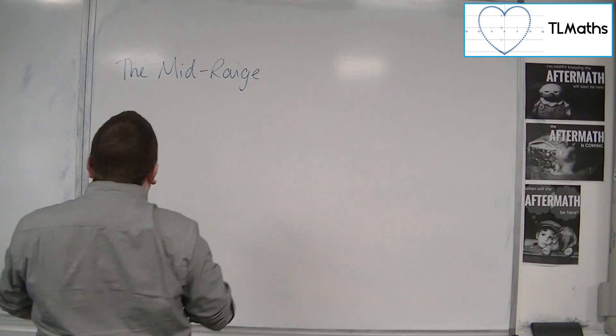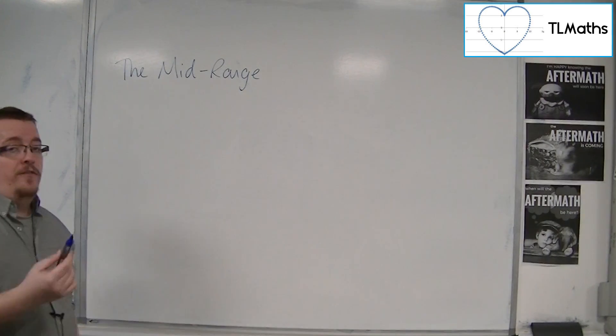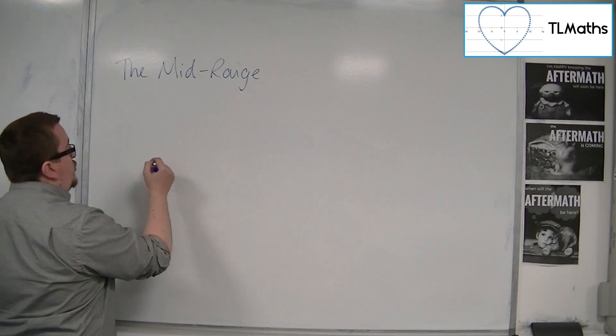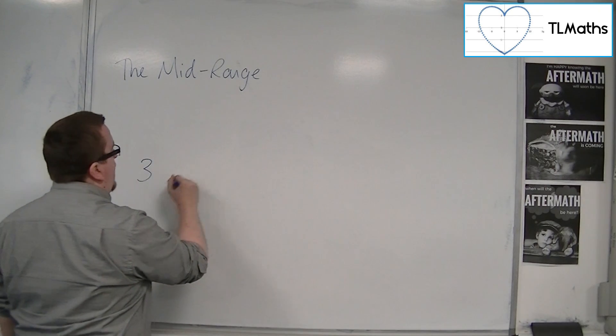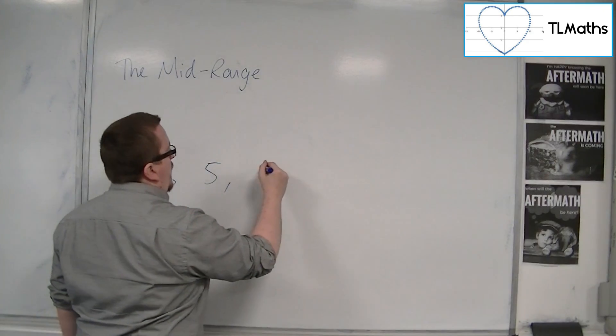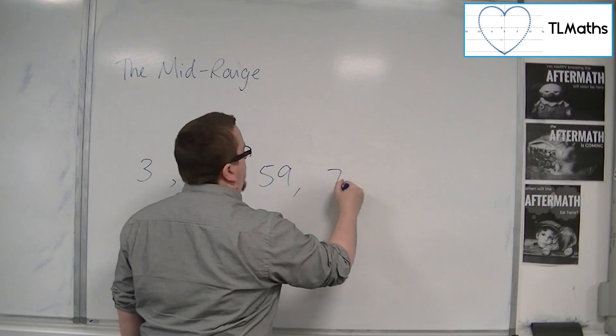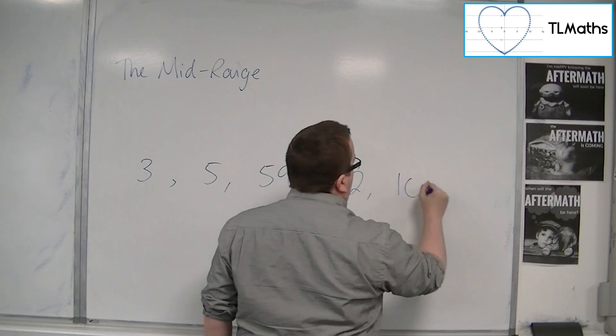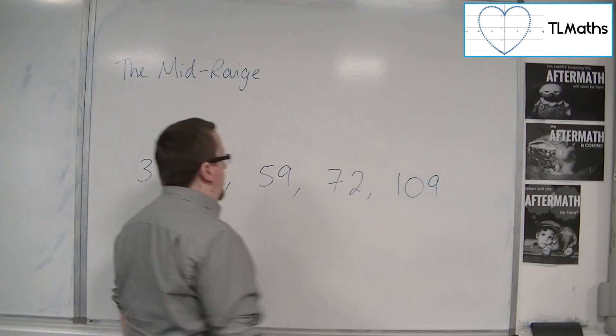So effectively what it means is that if you have a data set which comprises of 3, 5, 59, 72, and 109, for example,